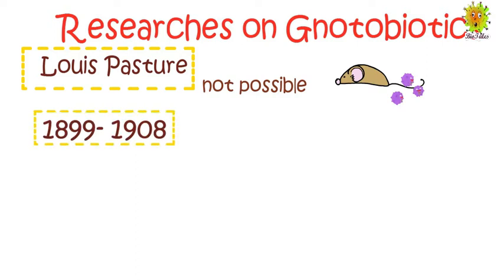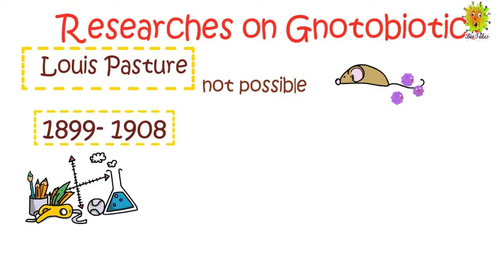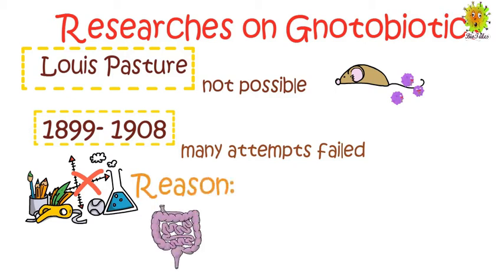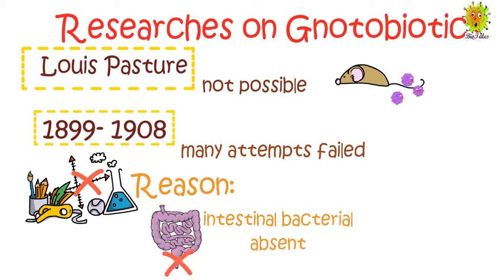After Pasteur, from 1899 to 1908, many attempts were made to grow germ-free chickens, but all attempts failed — all the birds died within a few months. When scientists tried to find out the reason, it was observed that many intestinal bacteria were important for the birds but were absent. These bacteria provided adequate nutrition to the birds, which is why the birds couldn't survive without them.